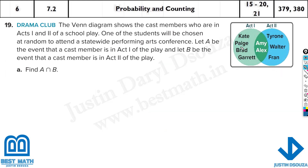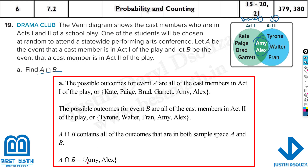The next problem uses a Venn diagram showing cast members in Act 1 and Act 2 of a play. One student will be chosen at random to attend a statewide performing arts conference. Let A be the event that a cast member is in Act 1, and B be the event they are in Act 2. Find the probability of A intersection B. Act 1 includes Kate, Paige, Brad, Garrett, Amy, and Alex. Act 2 includes Tyron, Walter, Fran, Amy, and Alex. A intersection B means who is in both dramas — that's Amy and Alex.